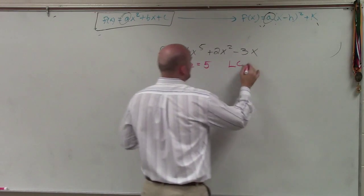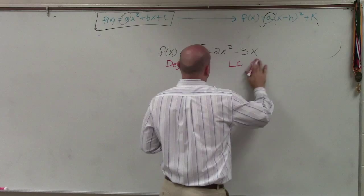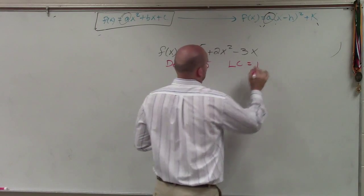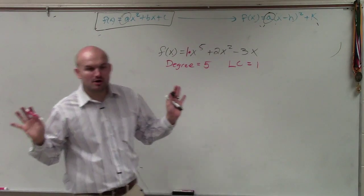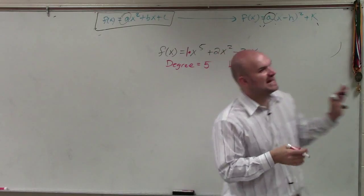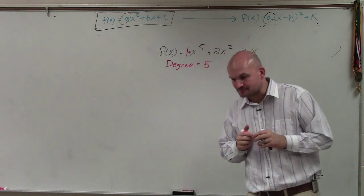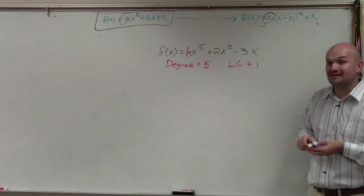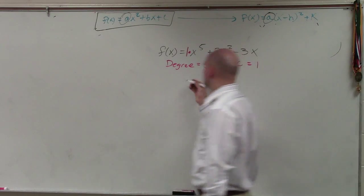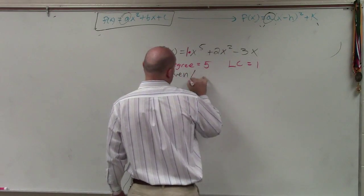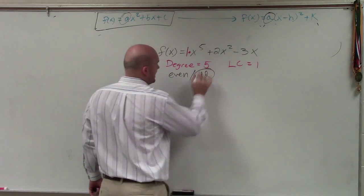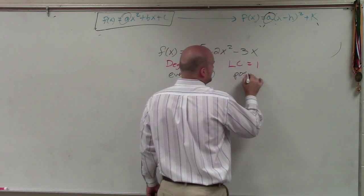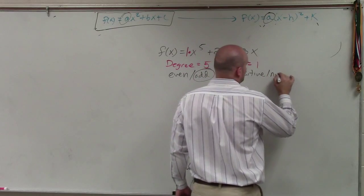The degree in this case is 5, and the leading coefficient is 1. So there's no harm in doing anything like this. Just write them down. That helps you remember. Now the next thing is, we need to understand, is my degree even or odd? It's odd. Is my leading coefficient positive or negative?